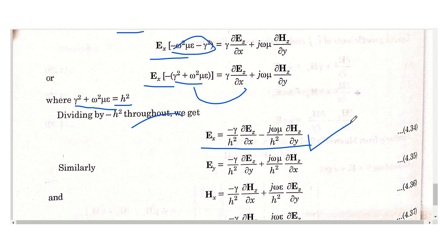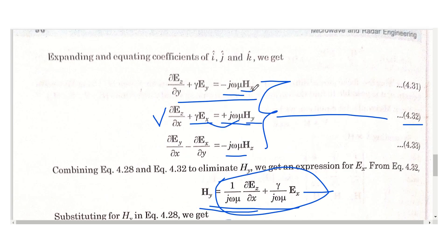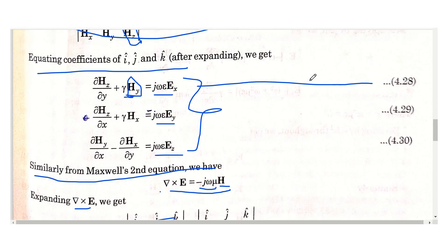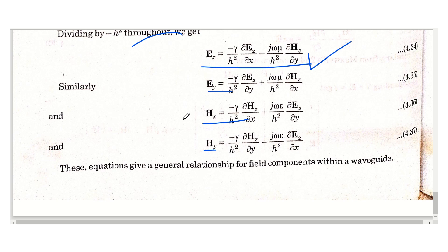Similarly, by taking Hx from the equations and substituting into the appropriate equation, we obtain Ey. This process yields the four final field component equations — Ex, Ey, Hx, and Hy — which are the electric and magnetic field equations in the x and y directions. These are the important equations you should remember for examinations. I hope you understood this topic. If you have any doubts, please let me know in the comment box. Thank you for watching this video.